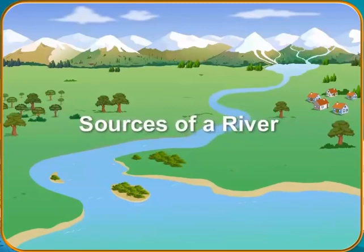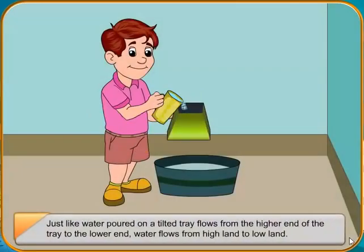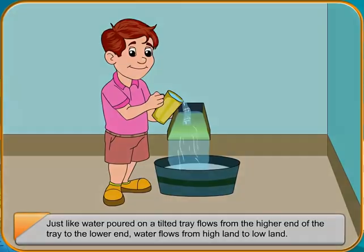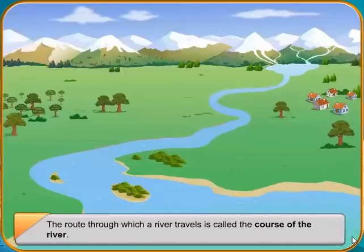Sources of a River. Just like water poured on a tilted tray flows from the higher end to the lower end, water flows from highland to lowland. Water flowing from highland to lowland over a long distance is called a river. The route through which a river travels is called the course of the river.